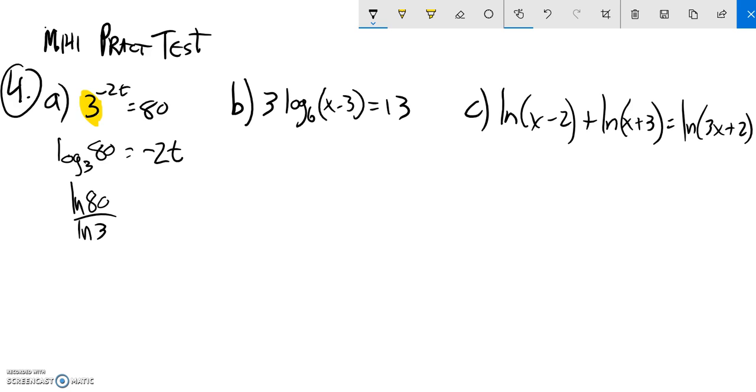Or I could do log base 10. I'm going to divide both sides by negative 2 to get t all alone. So it's going to be negative one half of that. I can grab my calculator, evaluate that, and it looks like t is about negative 1.994. So there's that one.